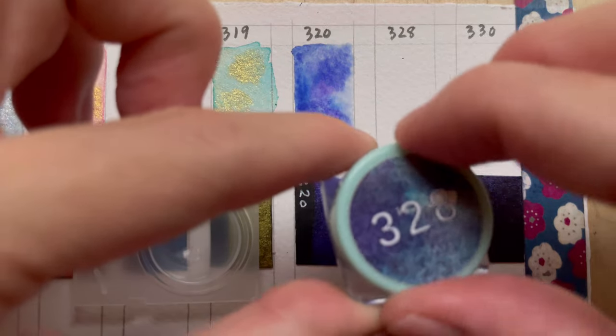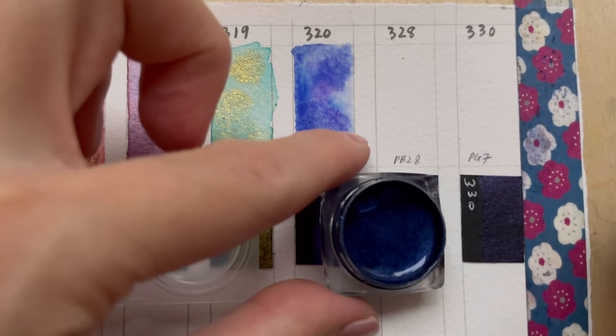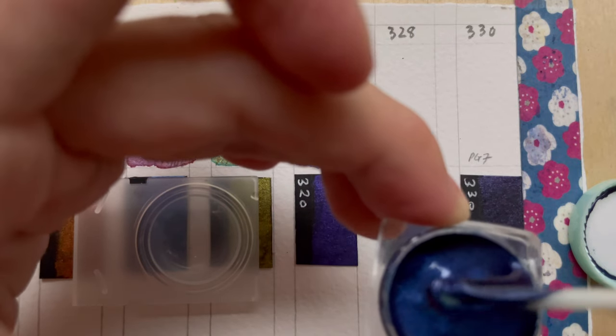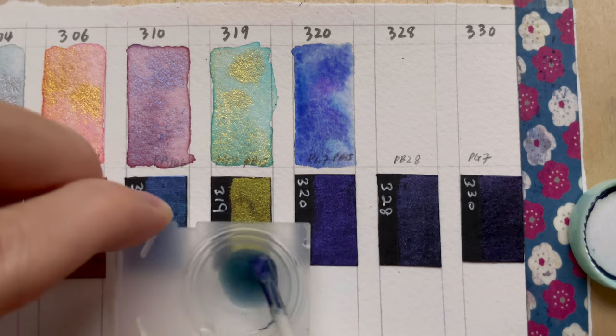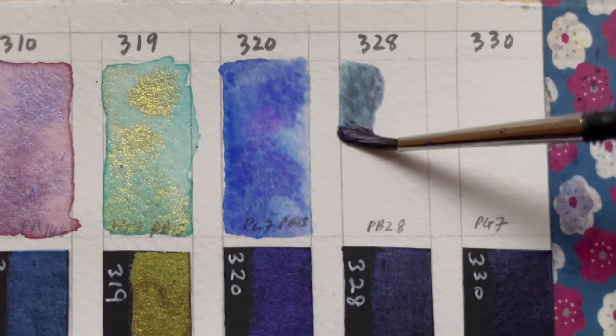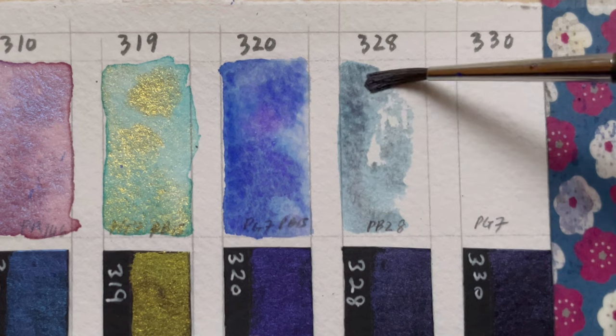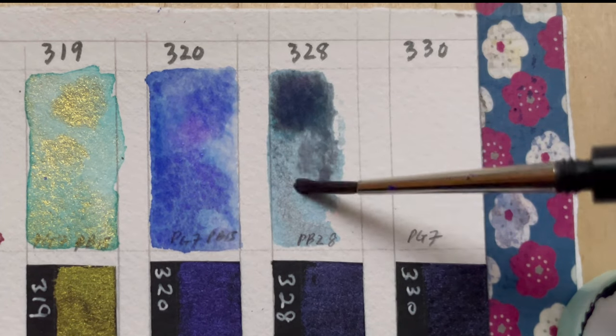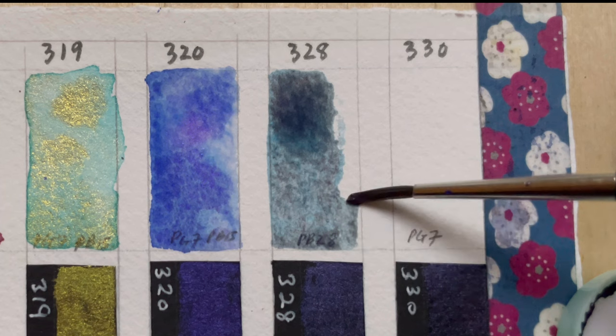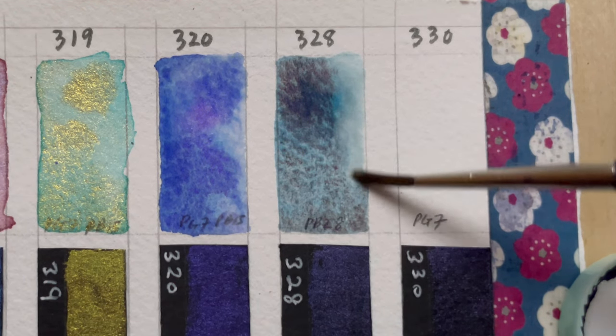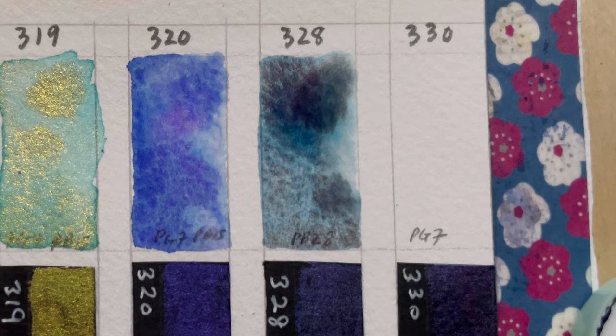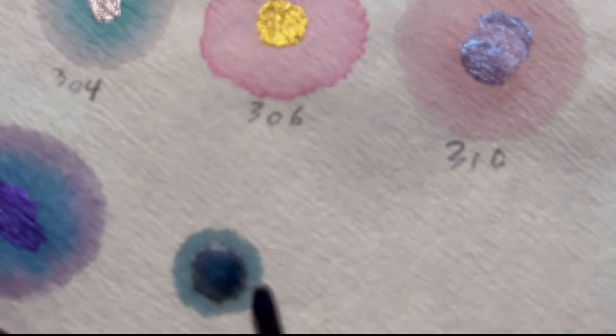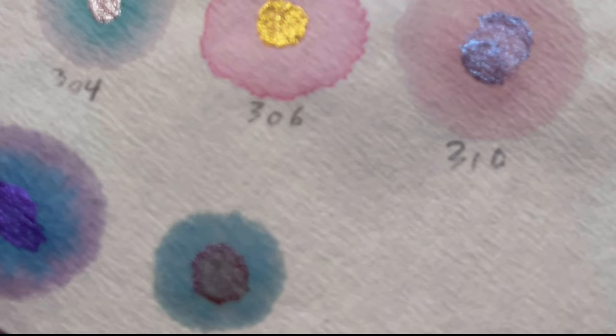Next we have 328. 328 is made from Mika and PB28. Finally something granulating. When you paint it, it is pretty interesting. You do see a bit of the green coming out and some purple, and on top of it you have the shimmering reddish pink particles. The mixture separates into a reddish center, shimmering center with a ring of blue.